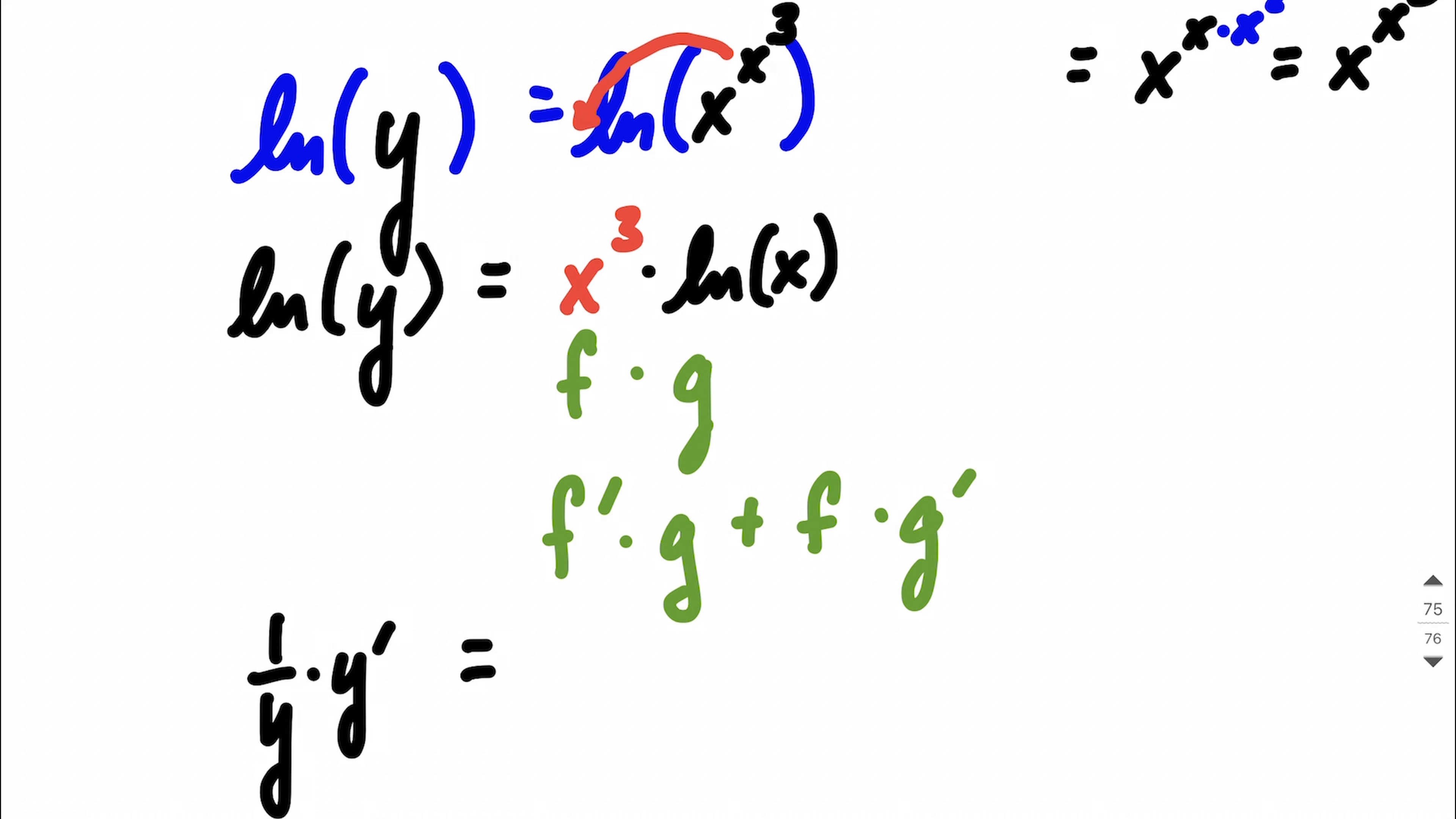On the right-hand side, now we can jump into that product rule. First thing we want to do is we want to take the derivative of x cubed. So the derivative there is going to be, using the power rule, 3x to the second power. Bring the exponent down, reduce by 1.